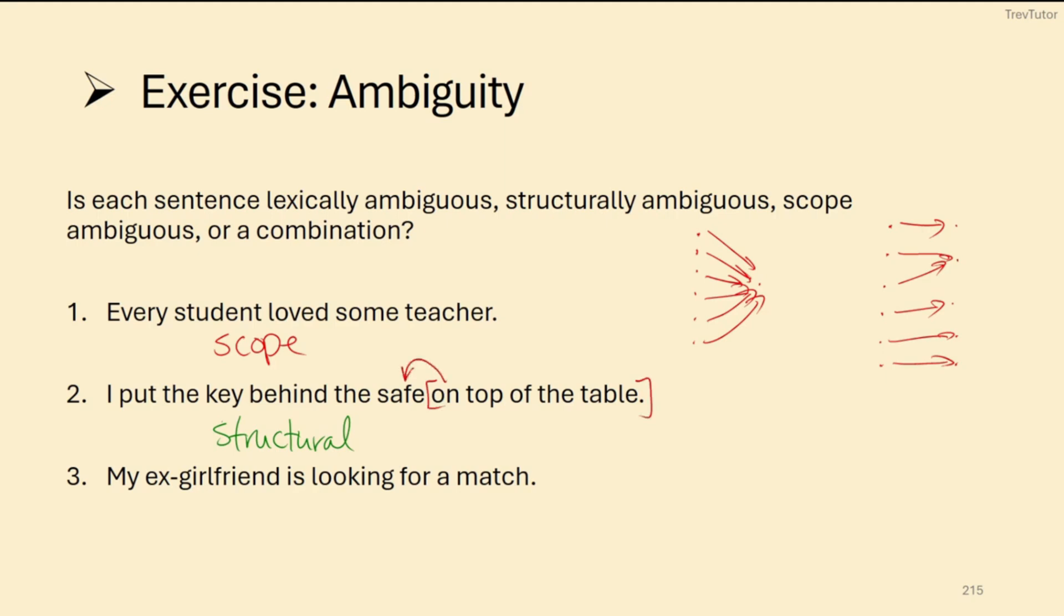Is on top of the table describing where the safe is? Or is it describing where the key is being placed? So maybe the key is just on top of the table and also behind the safe. Or maybe it's just behind the safe, which is on top of the table. So maybe the key is on a box behind the safe on top of the table.